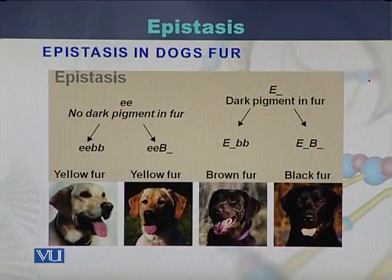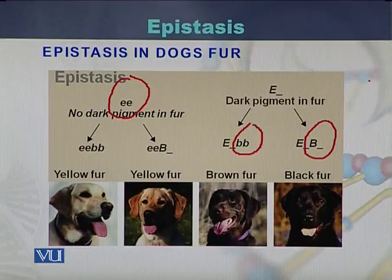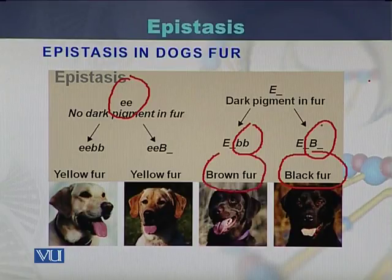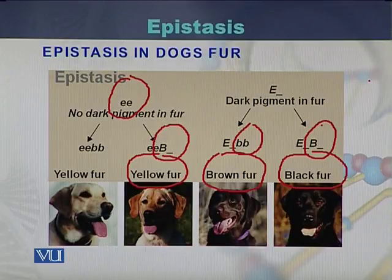In epistasis for dog fur, there are two genes. One gene is in the recessive form (ee), and the second gene is either dominant or recessive. If the second gene is dominant, the fur of the dogs will be black, and if that gene is recessive, the fur of the dogs will be brown. On the other hand, if the first gene is in homozygous condition, the fur of the dogs will be yellow.